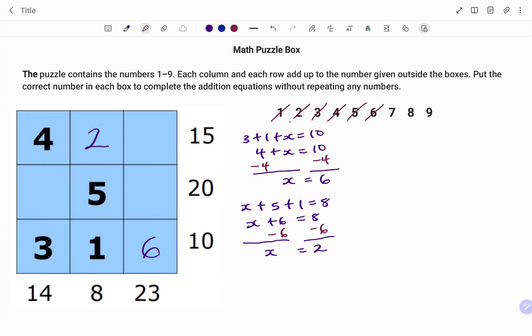The next step is to pick another row or column. In this case I'm going to pick my first row that has four, two, and the missing number. That row must add up to 15. I'm going to replace my missing number with x. So therefore I have four plus two plus x is equal to 15. Four plus two is six plus x equals to 15.